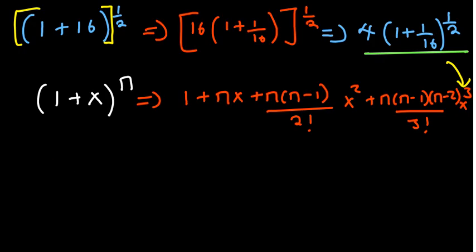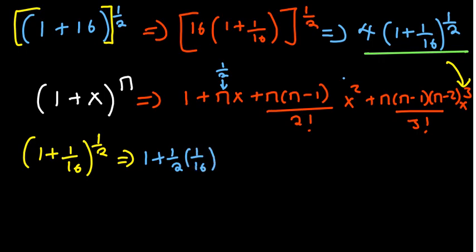We have (1 + 1/16)^(1/2) and we'll just substitute in this equation. The interesting part here is in this case the value of n is 1/2 and x is 1/16. So we have 1 plus half of the x which is 1/16.